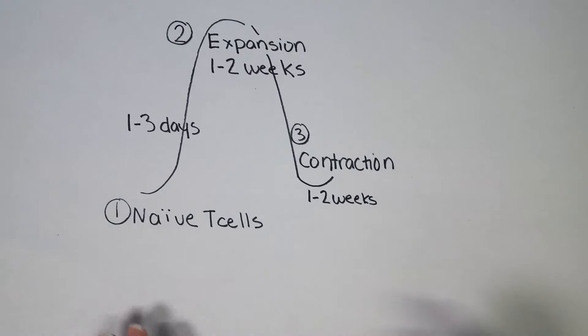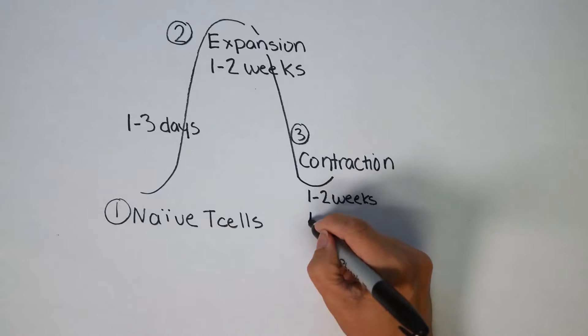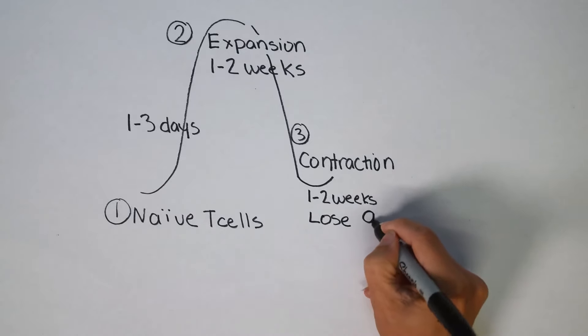You don't want to keep all these T cells around. You really just want the memory. So the remaining cells after contraction are all memory T cells. So there's five to 10% remaining.